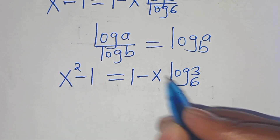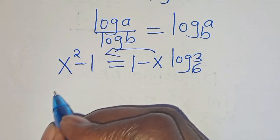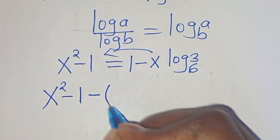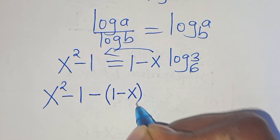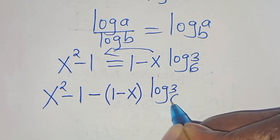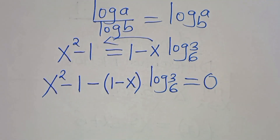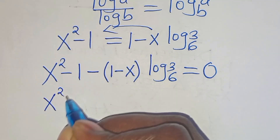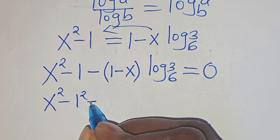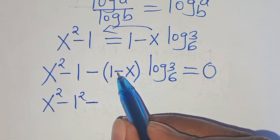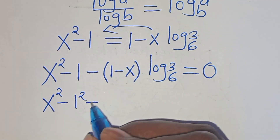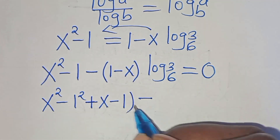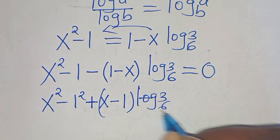So let's take 1 minus x times log 3 to base 6 to the left-hand side, so that we have x squared minus 1 minus 1 minus x times log 3 to base 6 equal to 0. Expanding, minus times minus x becomes plus x, so we have x squared plus x minus 1 times log 3 to base 6 equal to 0.